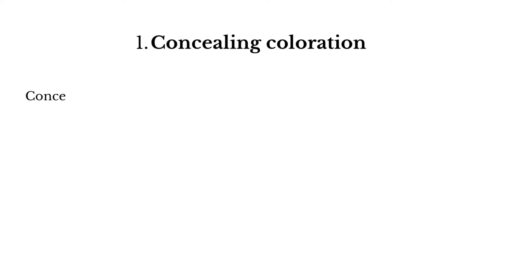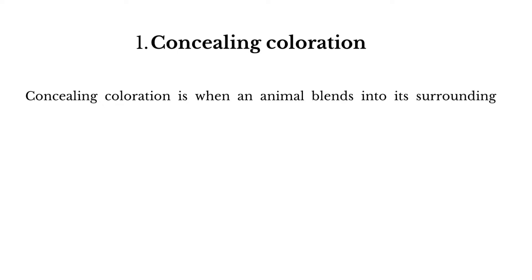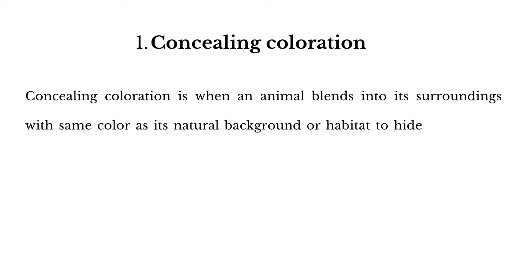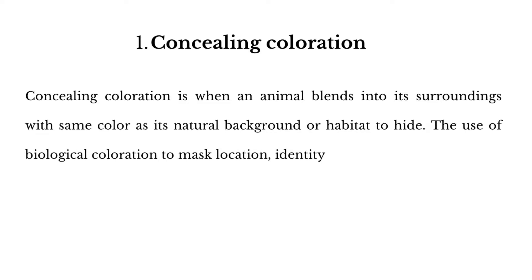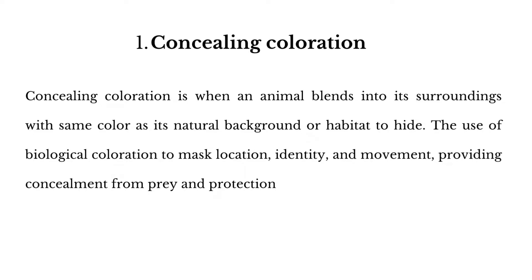1. Concealing coloration. Concealing coloration is when an animal blends into its surroundings with the same color as its natural background or habitat to hide. It is the use of biological coloration to mask location, identity, and movement, providing concealment from prey and protection from predators.